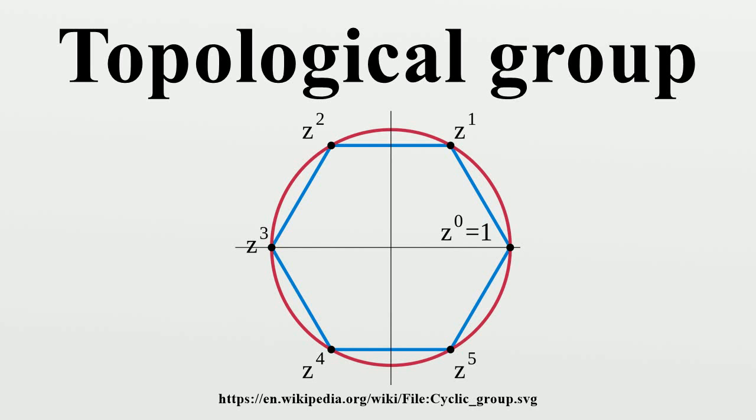together with a topology on G such that the group's binary operation and the group's inverse function are continuous functions with respect to the topology. A topological group is a mathematical object with both an algebraic structure and a topological structure.